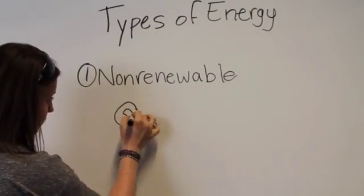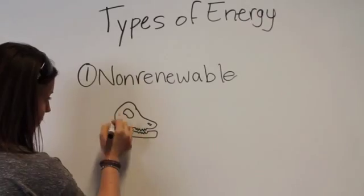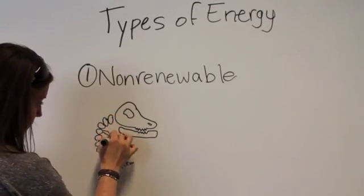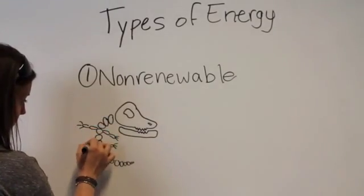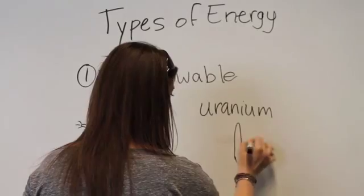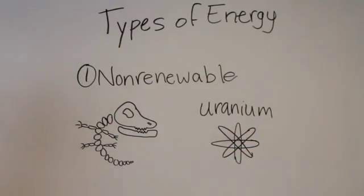Non-renewable resources are commonly thought of as fossil fuels. Fossil fuels are non-renewable, but not all non-renewable energy comes from fossil fuels. Non-renewable resources come from the ground as solids, liquids, and gases. These resources have the potential to be exhausted.